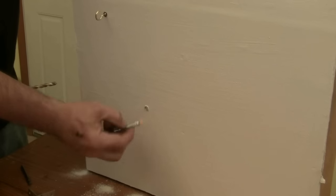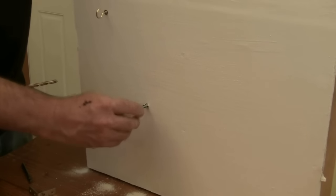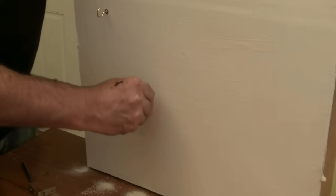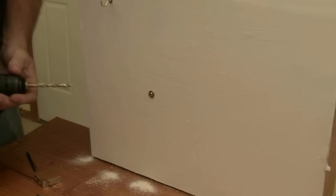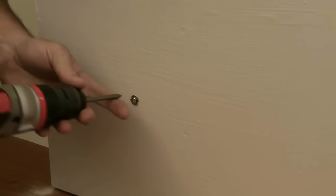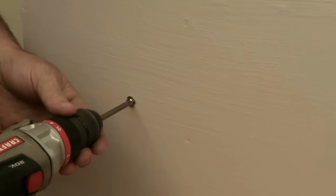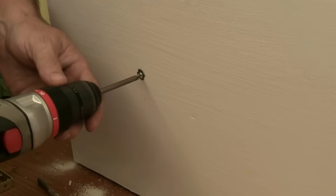Drill a hole just large enough for the molly bolt to pass through. Insert the molly into the drywall until the screw head is flush against the wall. As you turn the screw clockwise, the slotted sleeve expands. Stop drilling when you feel resistance.